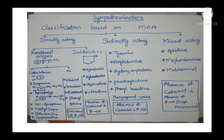Hi friends, this is Preeti. Today I'm going to discuss sympathomimetics. In my previous video I discussed receptors associated with the sympathetic nervous system and the synthesis and degradation of the neurotransmitter involved. Now we'll study the drugs which act on those receptors. Drugs acting on sympathetic receptors are of two types: sympathomimetics and sympatholytics.